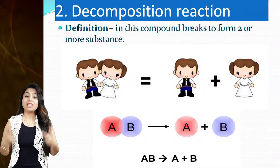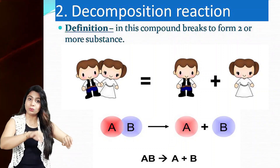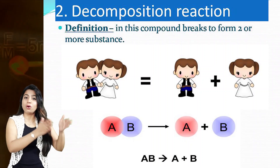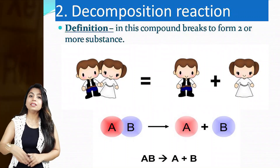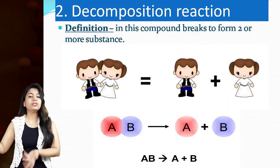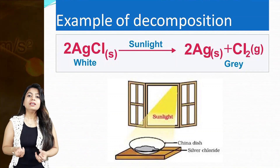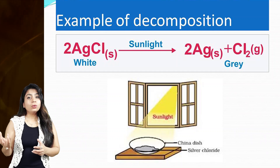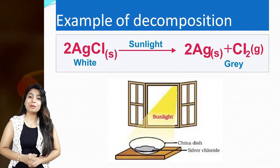The second type is decomposition reaction. In decomposition, substances are broken — the bonds between them are broken and new products are formed. On screen, a boy and girl have a bond between them; some process breaks that bond and they are separated — that is decomposition. For example, silver chloride AgCl₂, when kept under sunlight, turns grey — silver is separated from chlorine. Silver remains and chlorine gas is removed. The bond in AgCl₂ is broken, converting it into silver and chloride separately.